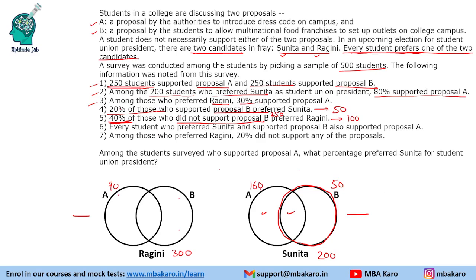So 100 people who are not supporting Proposal B preferred Ragini — this is the sum of two values in Ragini's circle. Every student who preferred Sunita and supported Proposal B also supported Proposal A, meaning the B-only region in Sunita's circle equals 0. So the B-and-Sunita total is 50, giving A-and-B-and-Sunita = 50. Since Sunita's total is 200 and the A-supporting portion is 160, the remaining value (none of the proposals, Sunita) = 40. Among those who preferred Ragini, 20% did not support any proposal — 20% of 300 = 60 people.